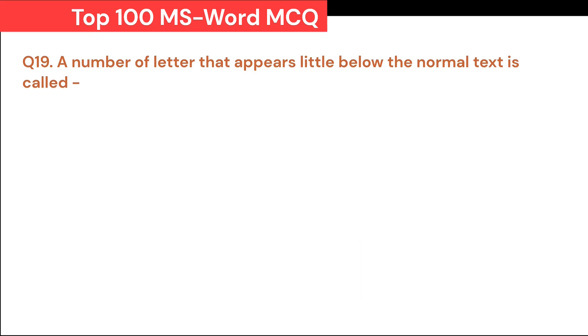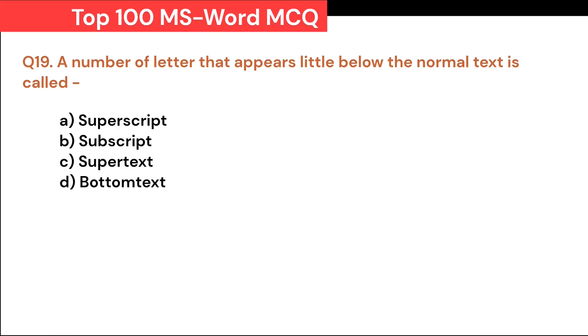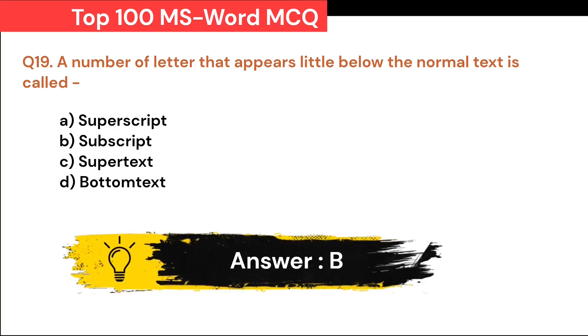A number or letter that appears a little below the normal text is called: A. Superscript. B. Subscript. C. Supertext. D. Bottom text. Correct answer is B. Subscript.